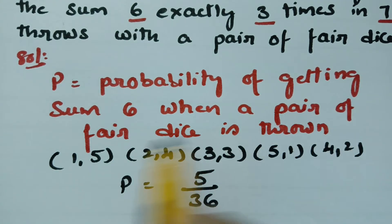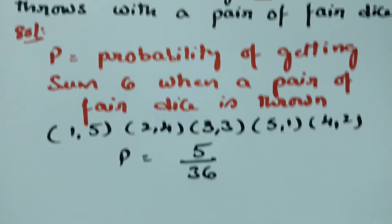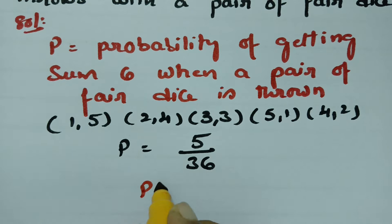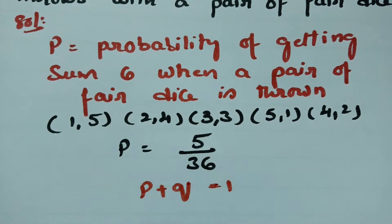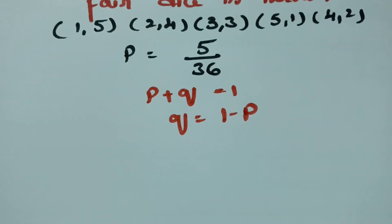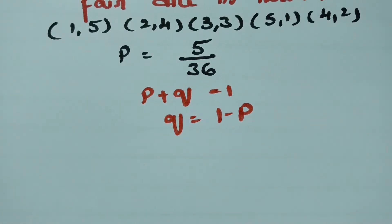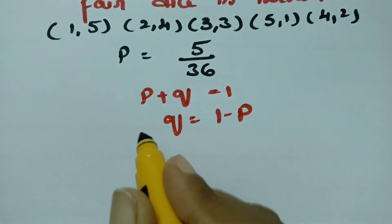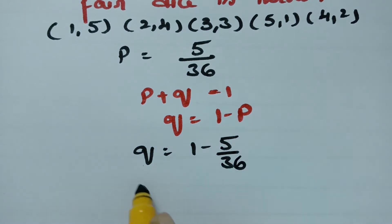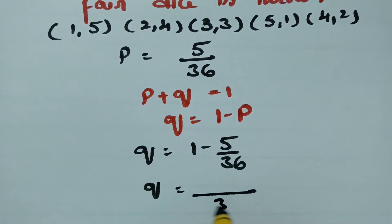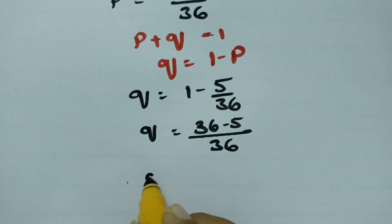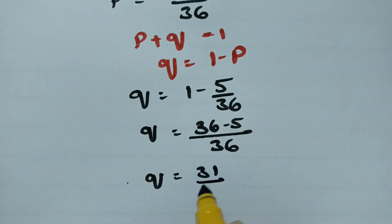With a pair of fair dice, total outcomes are 6 × 6 = 36. So P = 5/36. Since total probability equals 1, Q = 1 − P = 1 − 5/36 = 31/36.